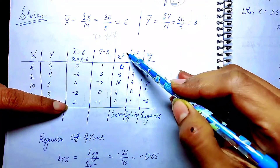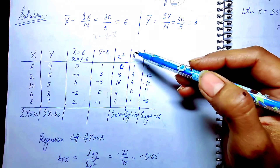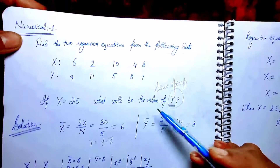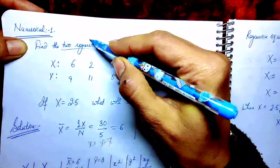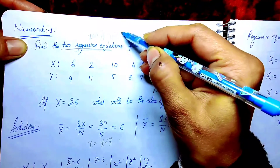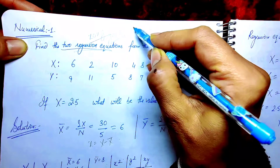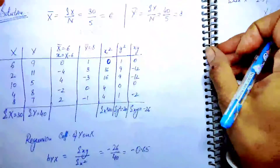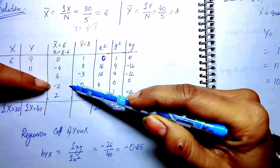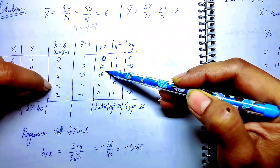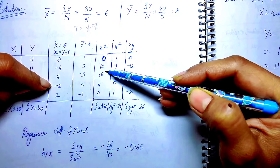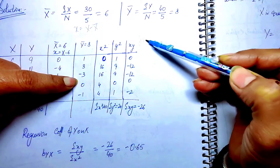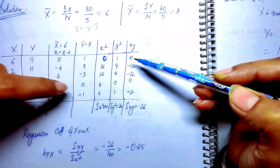Next, we need to compute x² because both regression equations require it. Since the problem asks for two regression equations — x on y and y on x — both formulas are needed: one uses x² and the other uses y². So in the table, we add columns for x², y², and xy. We compute small x², small y², and the product of small x and small y for each row.